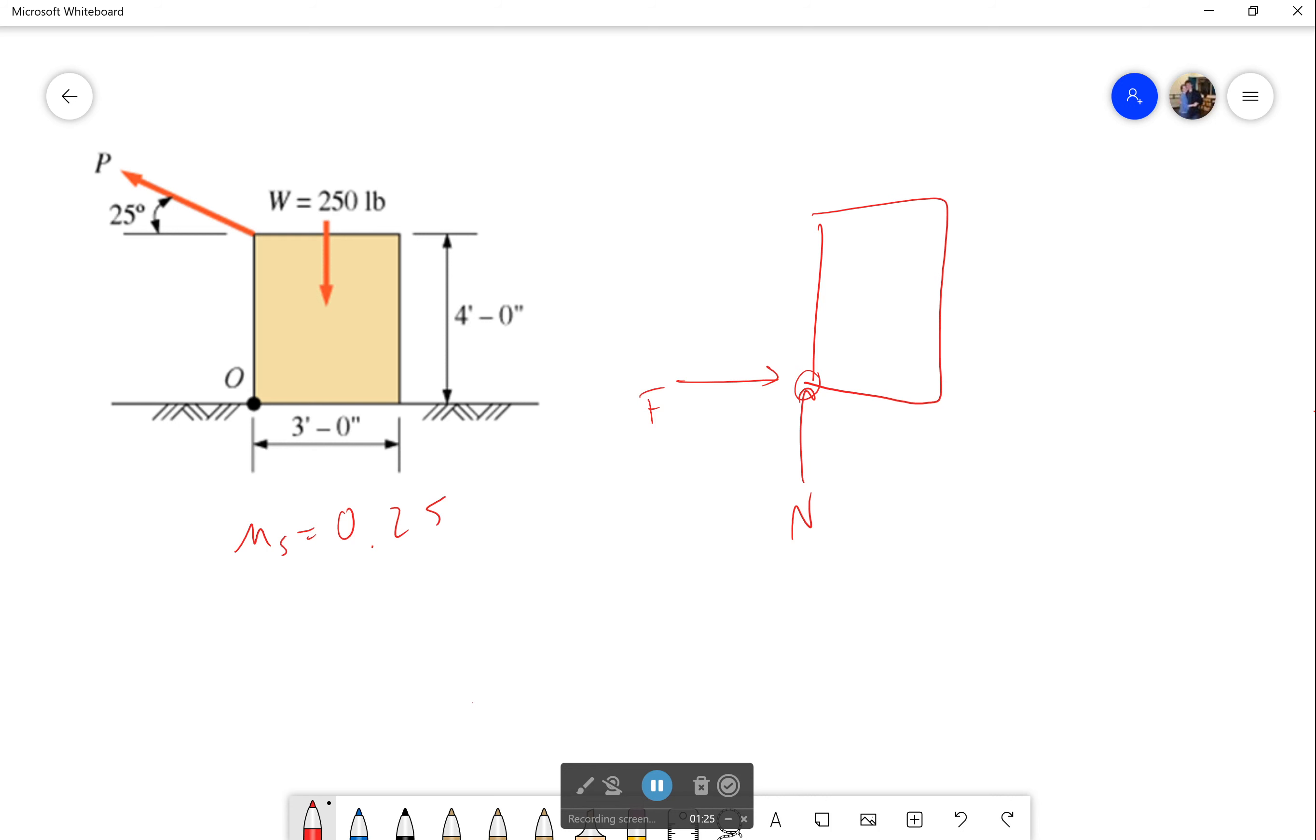Like if we were to apply force at a different position maybe it wouldn't tip, it would slide. But we don't know if it reaches max frictional force. We can only use this as F, it's just an unknown.